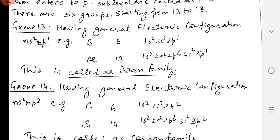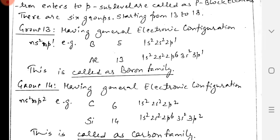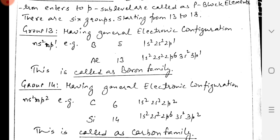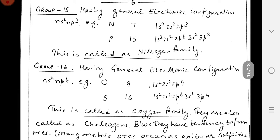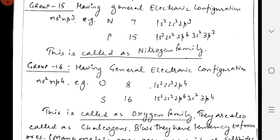Group 14 elements are Carbon, Silicon, Germanium, Tin, and Lead. We have two important ones and atomic numbers 6 and 14. The electronic configuration has been written. Since the first element is Carbon, this group is known as the Carbon Family.